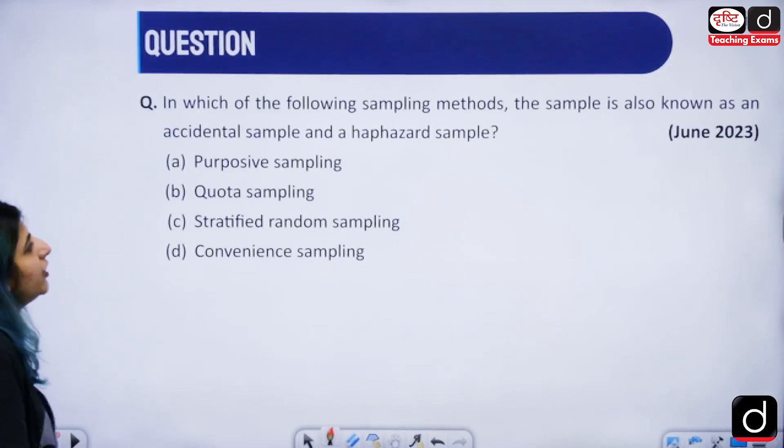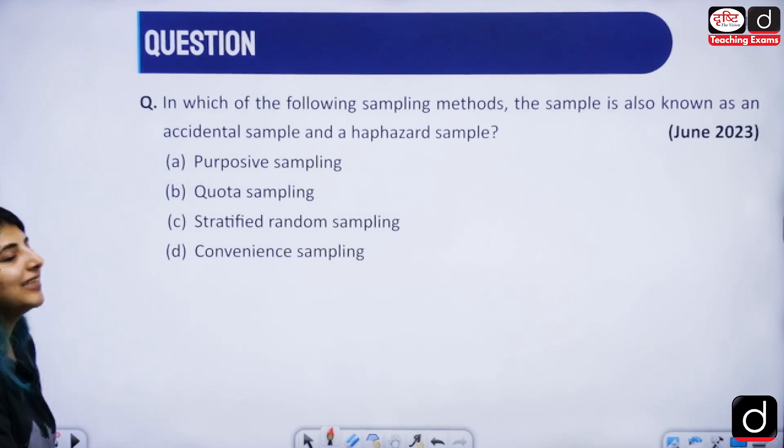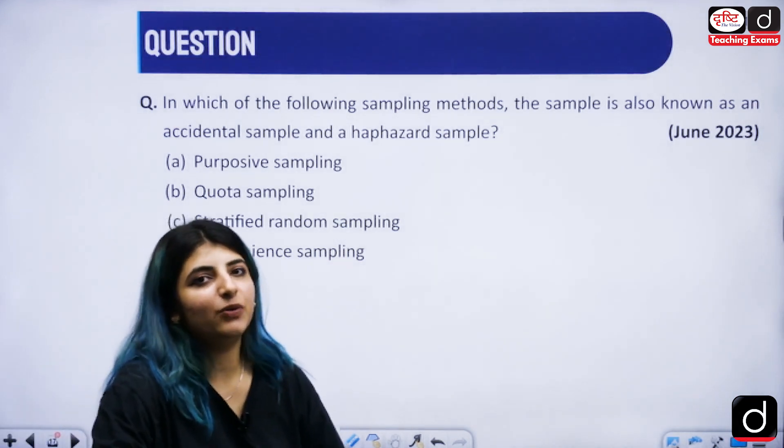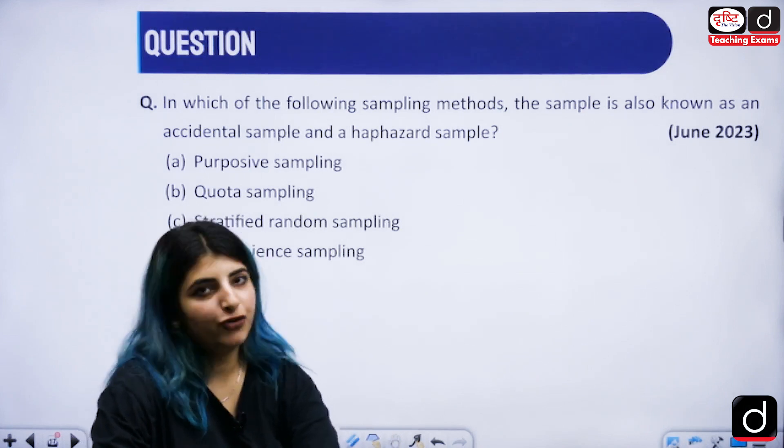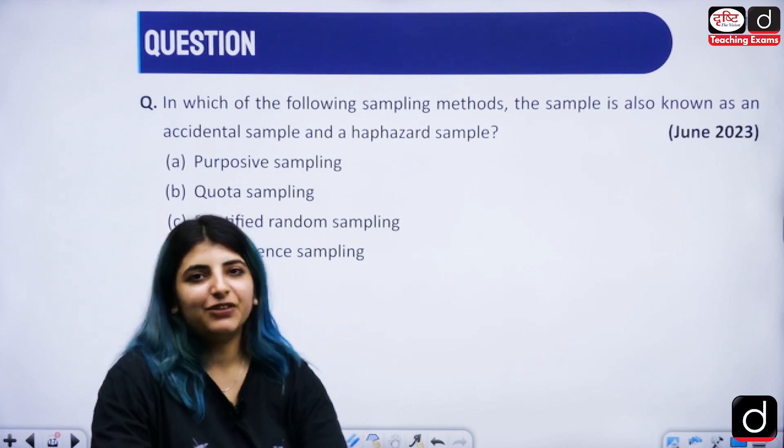Then we have which of the following sampling methods, the sample is also known as an accidental or a haphazard sample. The answer to this particular question is an option you will have to choose. You will have to give me an answer to this particular question in the comment section below. I will wait for sure for your answers to be dropped there. Thank you so much and have a good day. Bye bye.